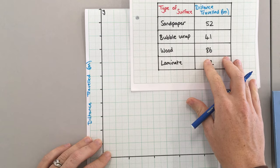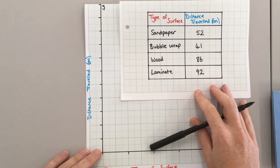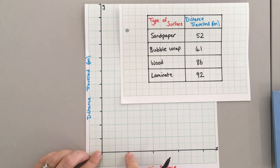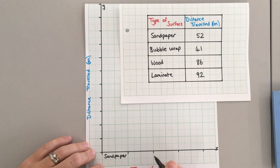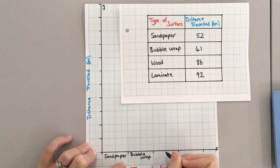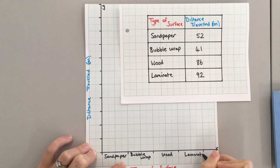Now I need to add some scales. So this is a bar graph, so I'm going to write my labels in between these markers. So I've got sandpaper, bubble wrap, wood, and laminate.